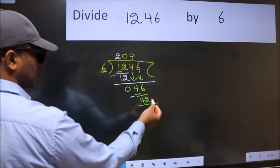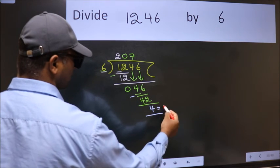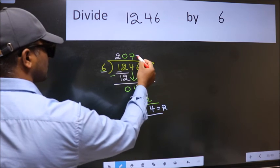No more numbers to bring it down. So we stop here. This is our remainder and this is our quotient.